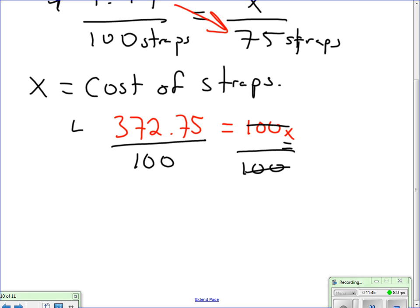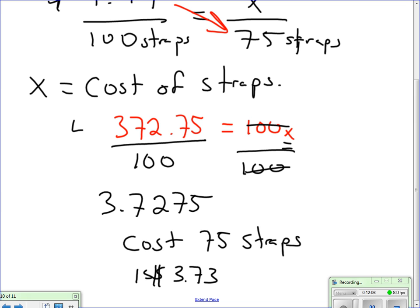My final answer is 3.7275. So, converting that to a cost. The cost for 75 straps is $3.73. So, this concludes our podcast on proportional reasoning. And I hope that was helpful.